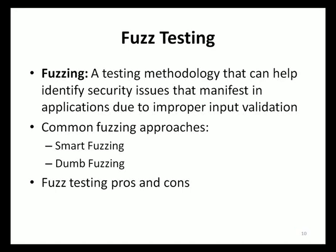Dumb fuzzing is similar to smart fuzzing, except that the invalid input variants are created randomly rather than in a targeted and deliberate fashion. Going back to our credit card example, dumb fuzzing would use invalid inputs such as entering no data, 1,000 characters, and a single character — random values that do not consider actual valid inputs or how they are processed by the application before creating invalid input variations.